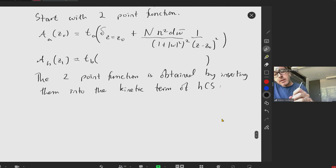I take two such states. Their two-point function is obtained by inserting to the kinetic term of the holomorphic Chern-Simons action. It's going to be integral over all my coordinates of A_a at z0, d-bar A_b at z0. And then when we contract indices, there's going to be a Cartan-Killing form.